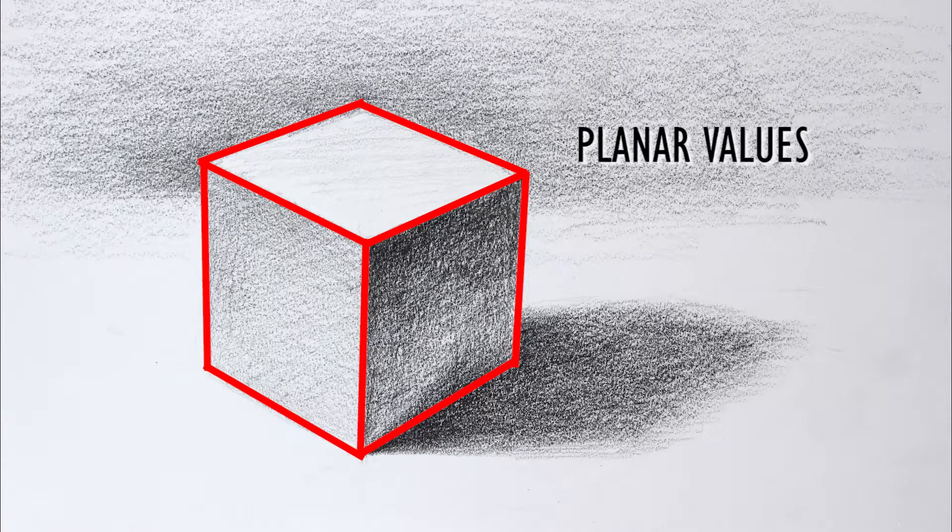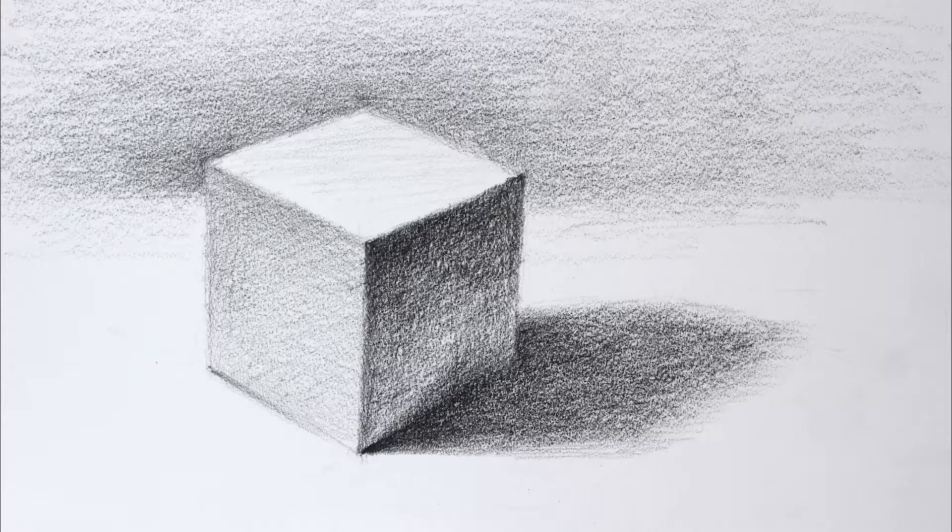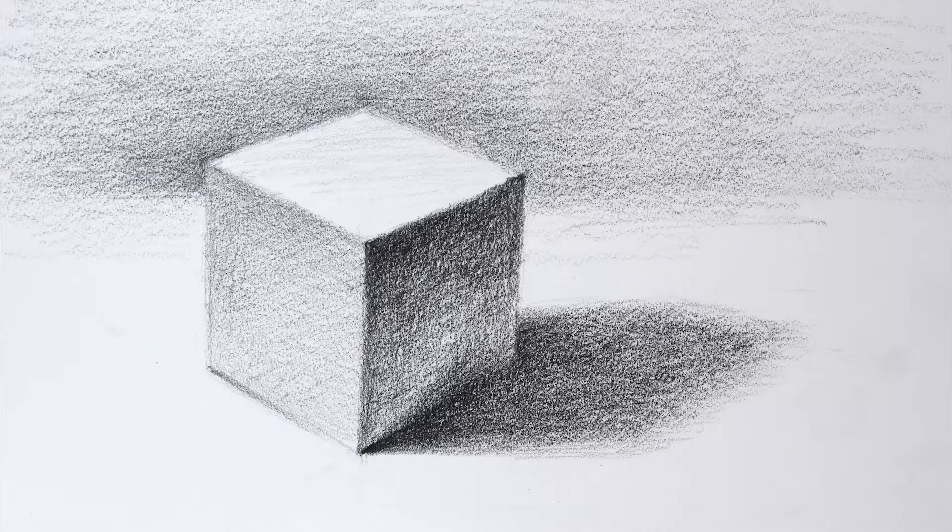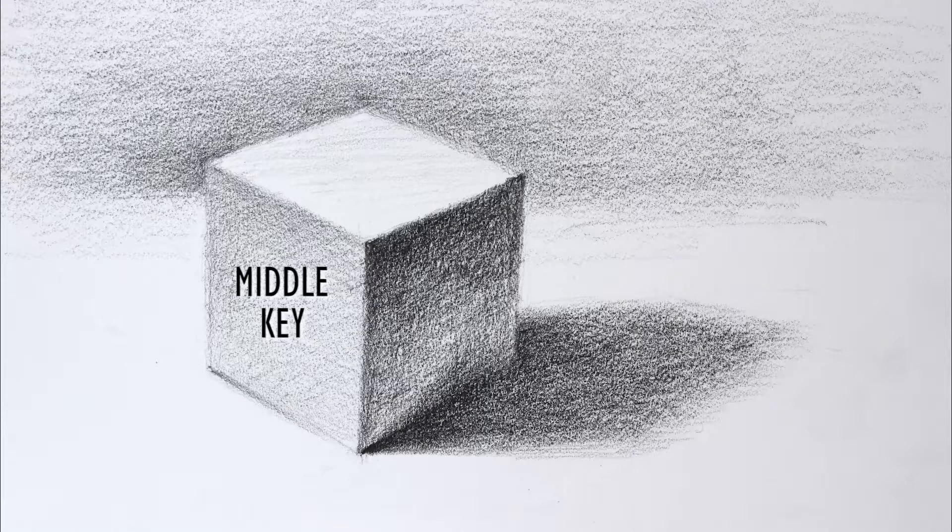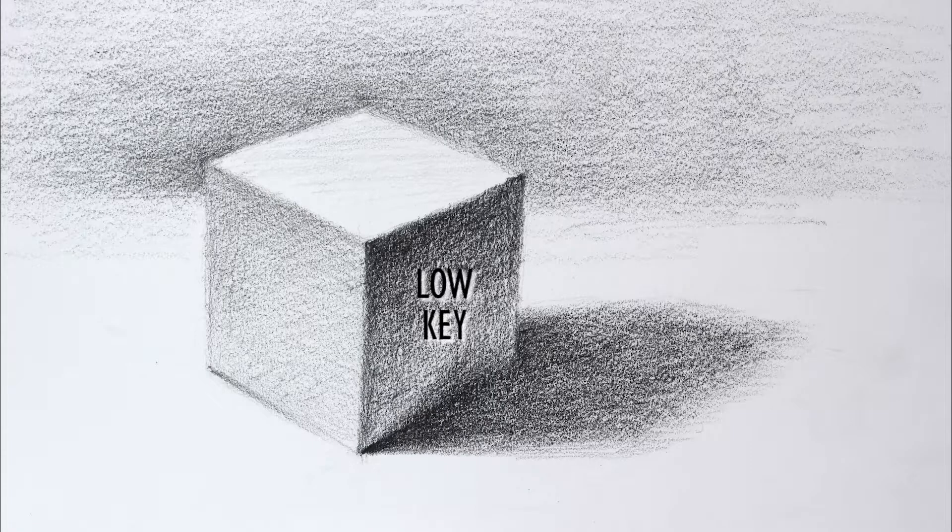These are called planar values. That's when each plane or side of a polyhedron or a 3 dimensional form with flat sides has a general value assigned to it. We see 3 sides on this cube. This side that's being hit most directly by the light source is a high key value. This side being hit less directly with our light is a middle key value. And this side has very little light reaching it and is mostly a low key value.